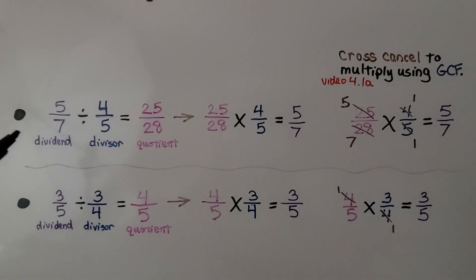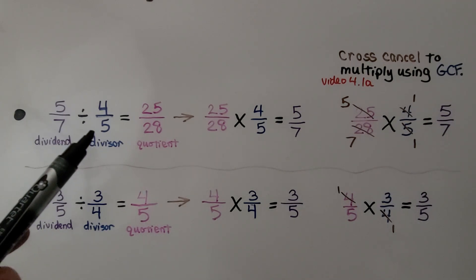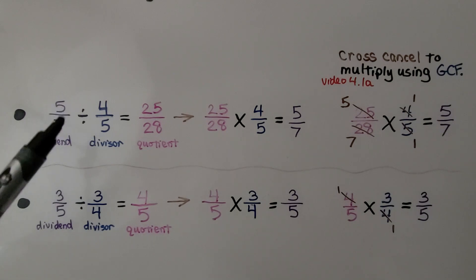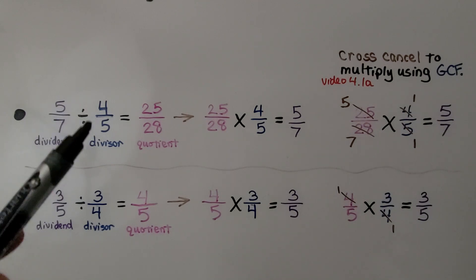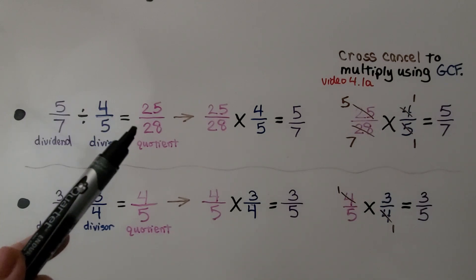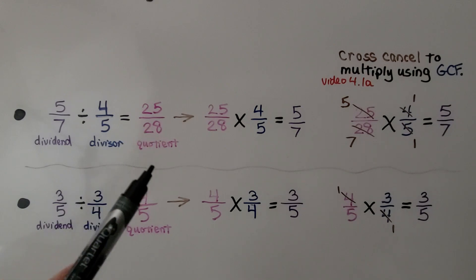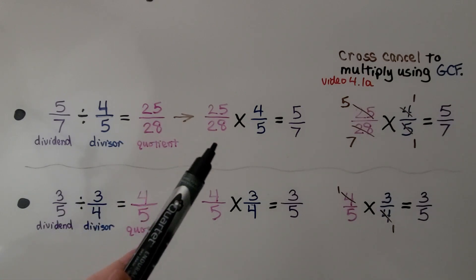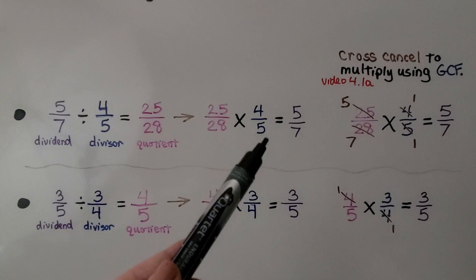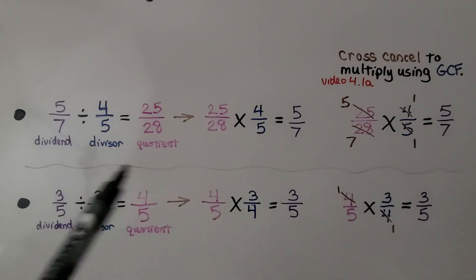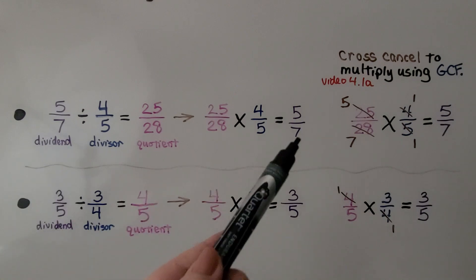Here we have 5 sevenths as our dividend and 4 fifths as our divisor. When we divide them, 5 sevenths divided by 4 fifths, we get 25 twenty-eighths as the quotient. We can write it as 25 twenty-eighths times the divisor, 4 fifths, and that will be equal to the dividend, 5 sevenths.